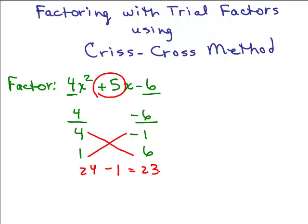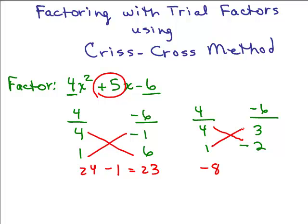That didn't work. If it came out to be negative 5, all we would have to do is switch the plus and minus sign. But 23 isn't the opposite of 5 either, so this didn't work doing 4 and 1 with the 1 and the 6. Let's try 4 and 1 with other factors of 6 — how about 2 and 3? I can't put the 2 here, so I'm going to put the 3 instead. Since it really has to be negative 6, I need to put the minus sign in front of one of the numbers — let's put it here. We do the crisscross: multiply those together, which is negative 8, and then multiply those together, which is plus 3, and I add them together and get negative 5.